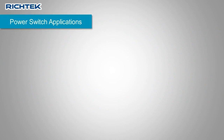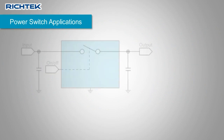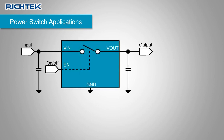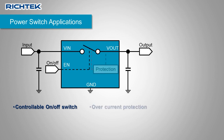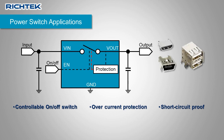Besides voltage regulators, you may also need power switches to enable a specific supply rail. Power switches are basically electrically controllable on-off switches. They often have built-in over-current protection, which makes the application short circuit proof. Power switches are often used to provide power and protection for USB ports.